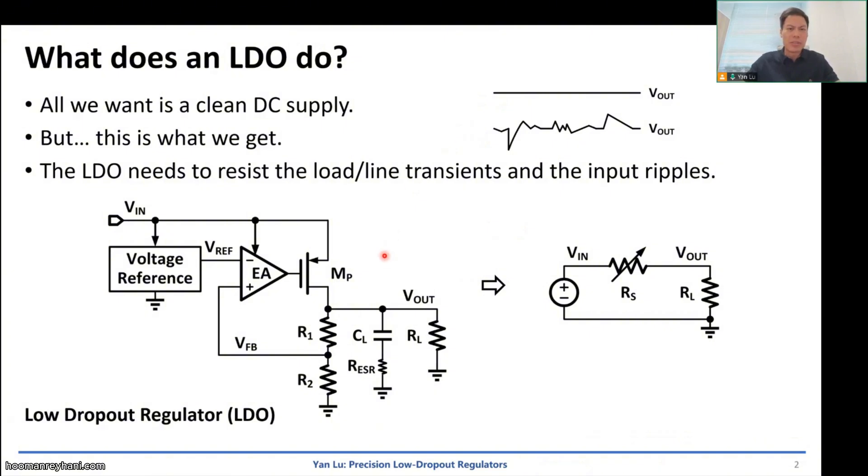So basically this is the LDO topology. We have a voltage reference that generates VREF for the error amplifier, and then the EA will control the power transistor. Basically it's tuning the on resistance of the transistor. So in the equivalent circuit, we get the tunable resistor in series with the load resistance. So when the load current changes, the source resistance changes, then we get a regulated output voltage.